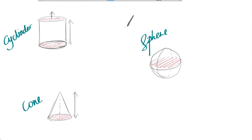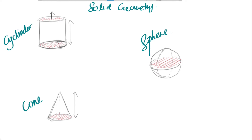Hi, welcome! Today we'll be talking about solid geometry for PMR. I'll introduce three shapes: the cylinder, the cone, and the sphere, and I'll teach you how to apply the formula to each shape.